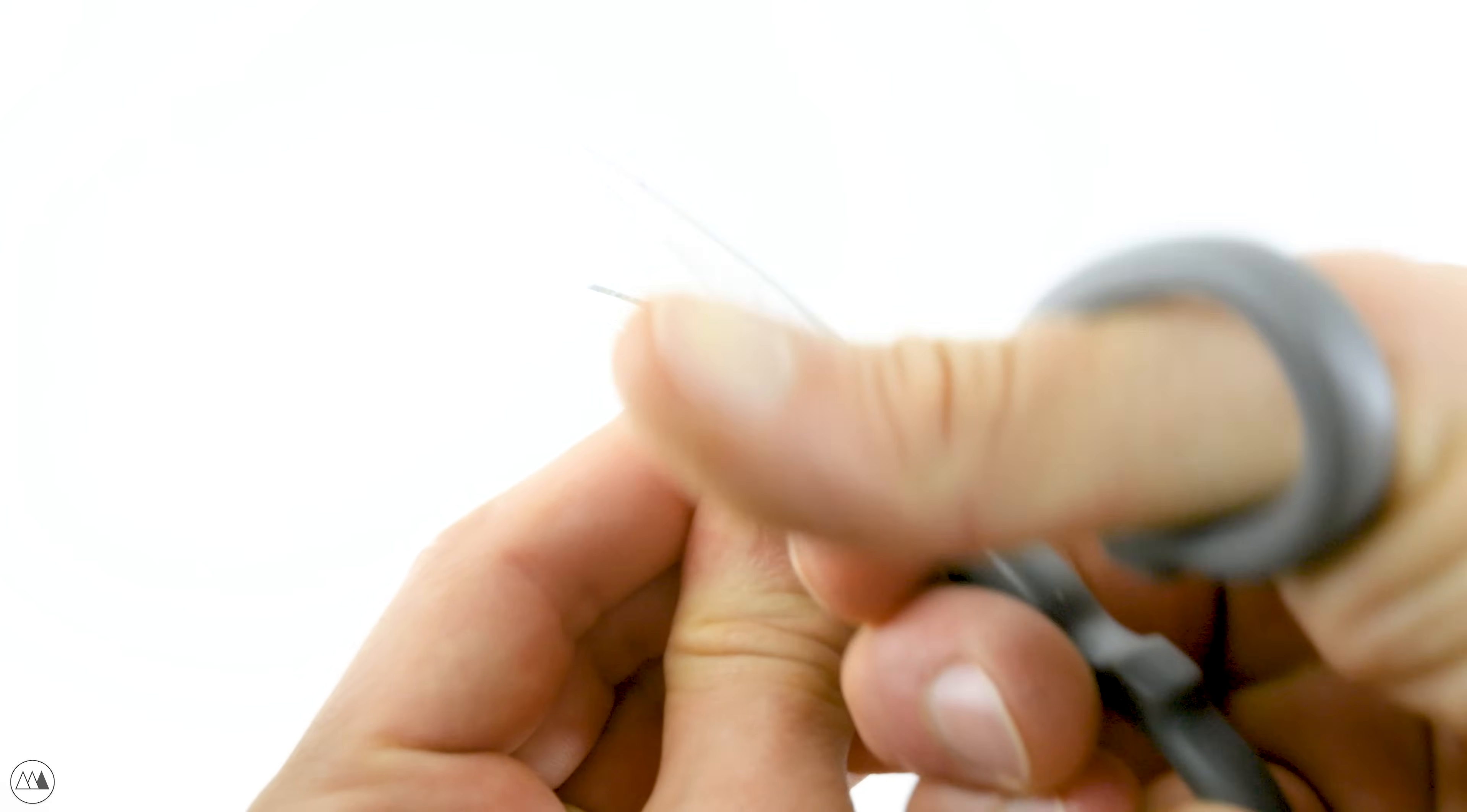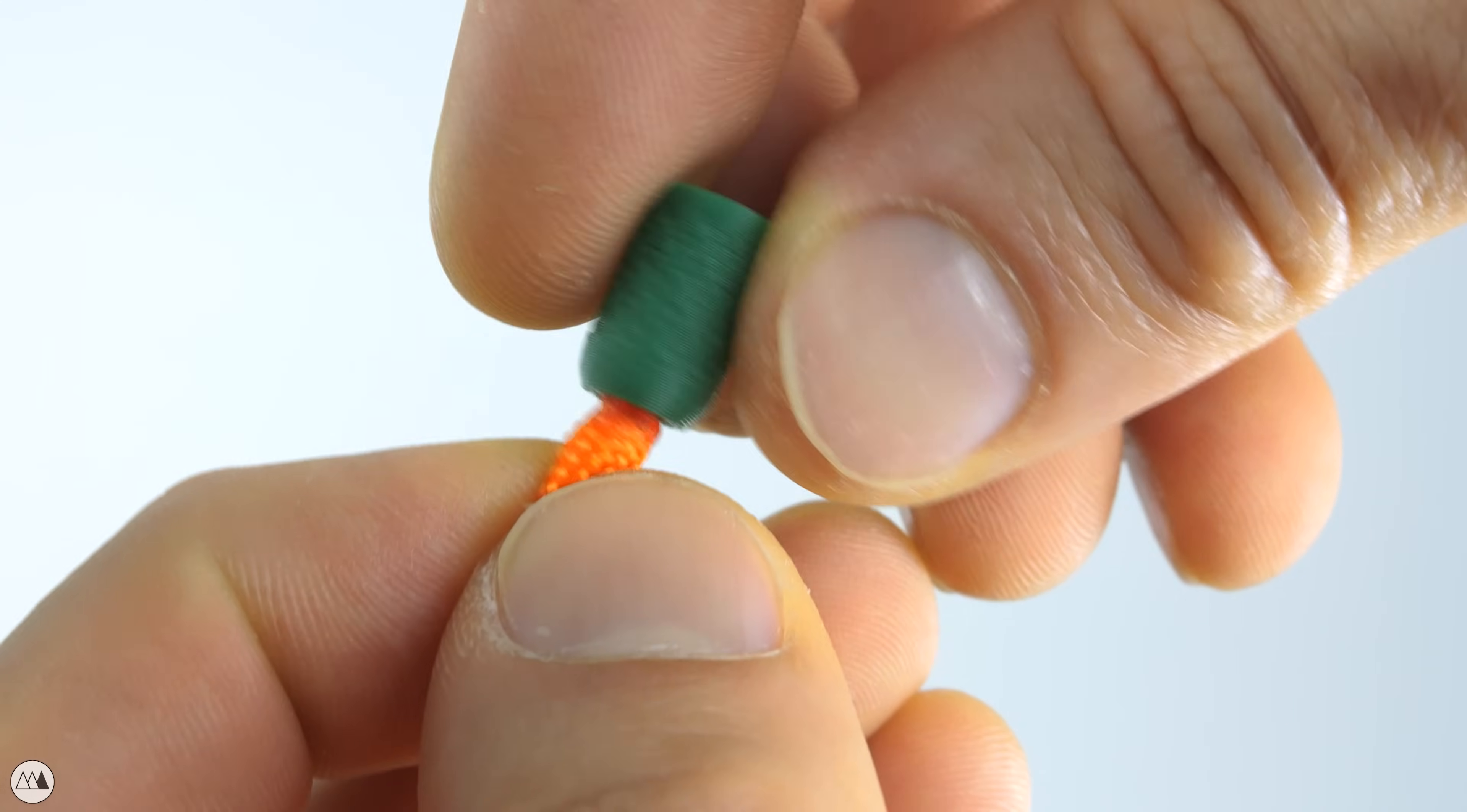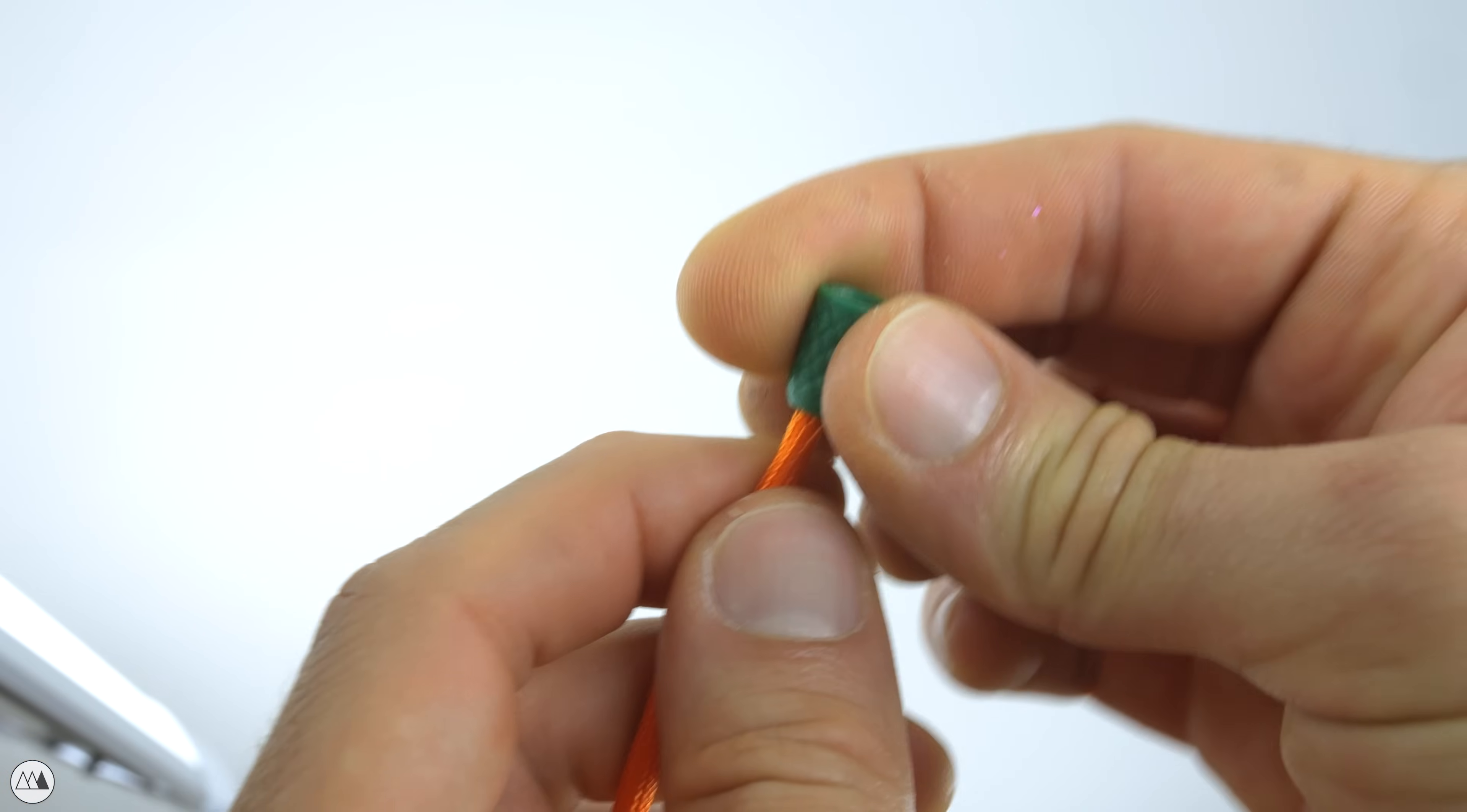I'll cut my strap to length and then use a lighter to melt and shape the end of the nylon cord. First, so it fits through this cap, and then again, just to make the end wide enough to not pull back out. We'll do that on both sides.